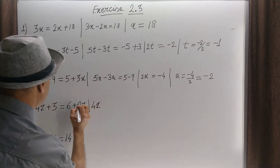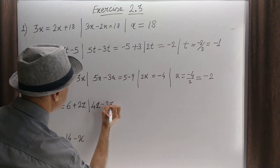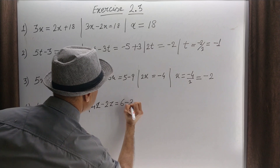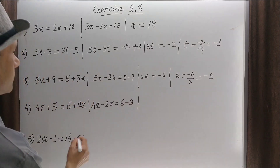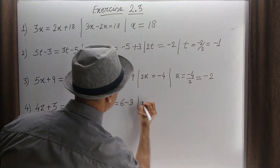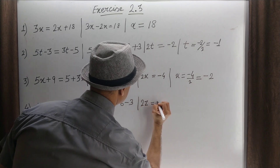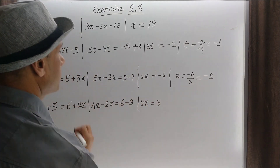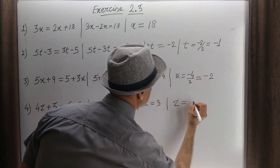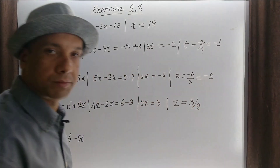4z minus 2z is equal to 6 minus 3. This becomes 2z is equal to 3. So z is equal to 3 by 2. Clear?